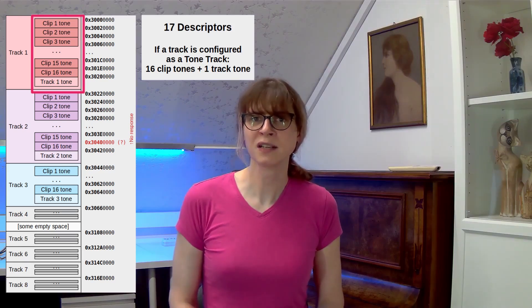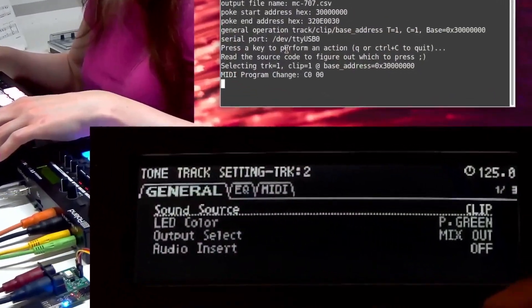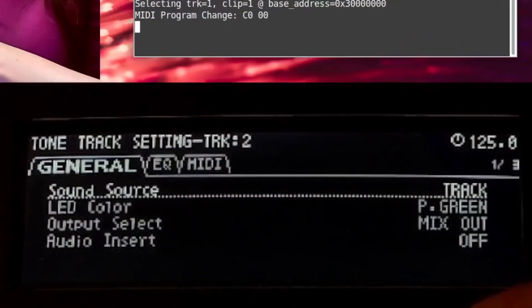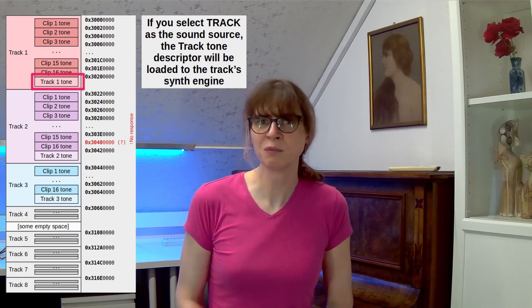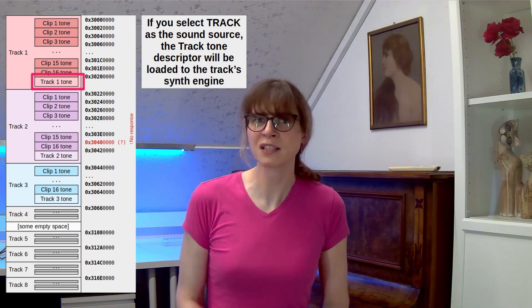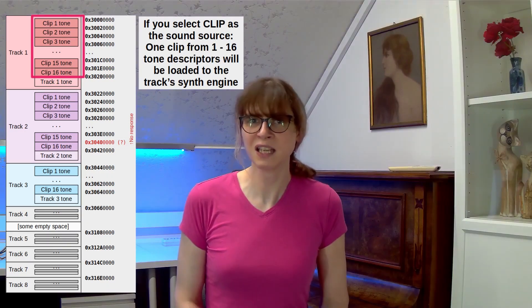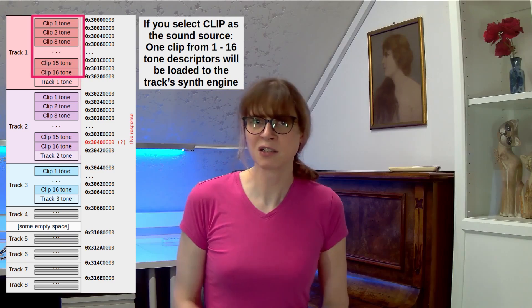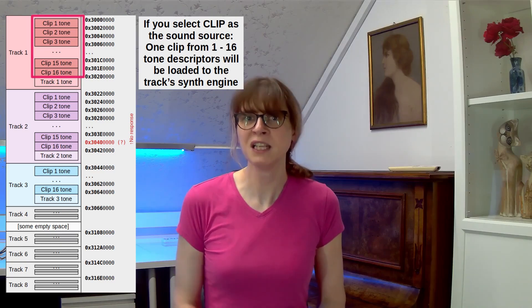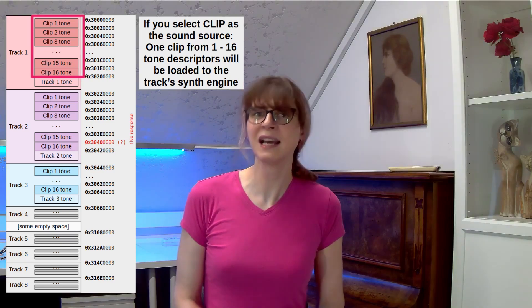If you initialize a track as the tone track, only one of the 17 descriptors will be loaded to the Zencore sound synthesizer of that track. If you choose track as the sound source, the track tone descriptor will be loaded to the track sound synthesizer. And if you choose clip as the sound source, one of the clip sound descriptors will be loaded at a given time. The other descriptors will be ready to be loaded immediately after you select another clip.